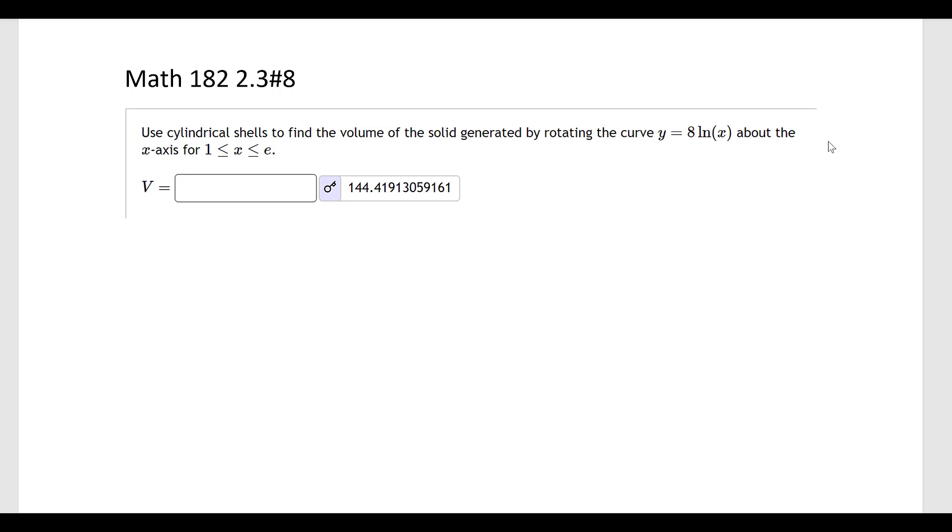Okay, this is number 2, or number 8 from section 2.3. This is Calculus 2, and it says use cylindrical shells to find the volume of the solid generated by rotating the curve y equals 8 natural log of x about the x-axis for x being between 1 and e.